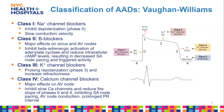To further classify these drugs by where they work on the action potential: Class 1 sodium channel blockers inhibit depolarization in Phase 0, blocking the opening of voltage-gated fast sodium channels and slowing conduction velocity. Class 2 beta blockers have their major effects on the sinus and AV nodes, inhibiting beta-adrenergic activation of adenylate cyclase.